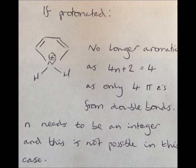If this molecule is protonated, it is no longer aromatic. If we look at the molecule, it only contains the 4 pi electrons from the double bonds. Therefore, 4n plus 2 equals 4. n needs to be an integer, and this is not possible in this case.